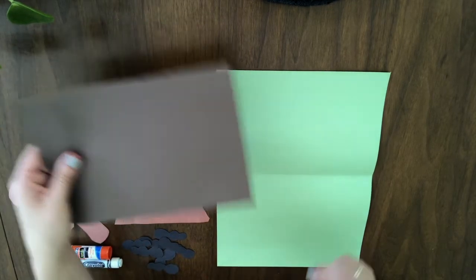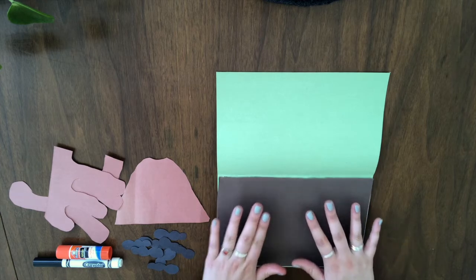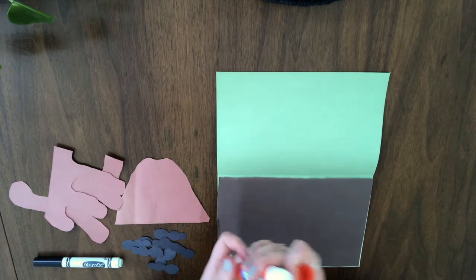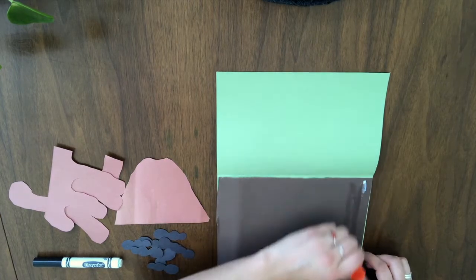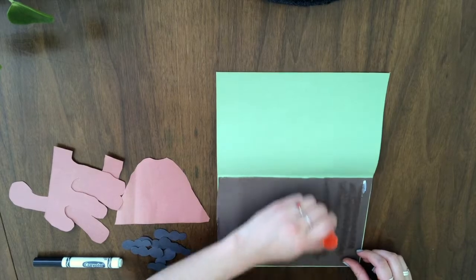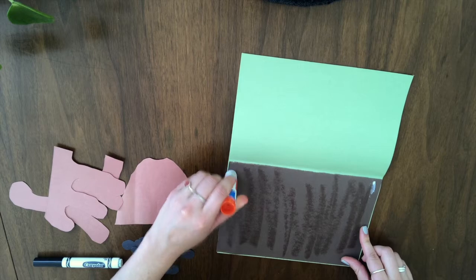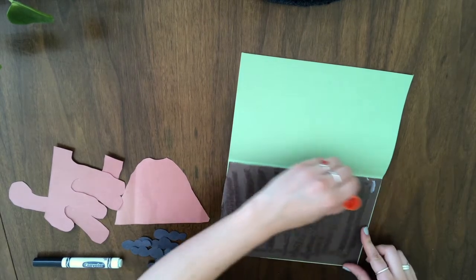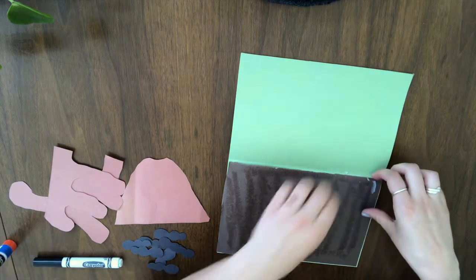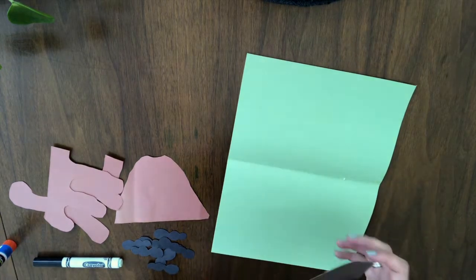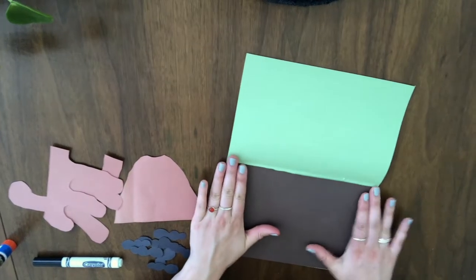And then we're gonna take our half sheet of dark brown paper. This is gonna be our soil. So what we're gonna do is have a glue stick, and we're gonna glue our half sheet of dark brown paper to the lower part of the long sheet. Like so. Okay.